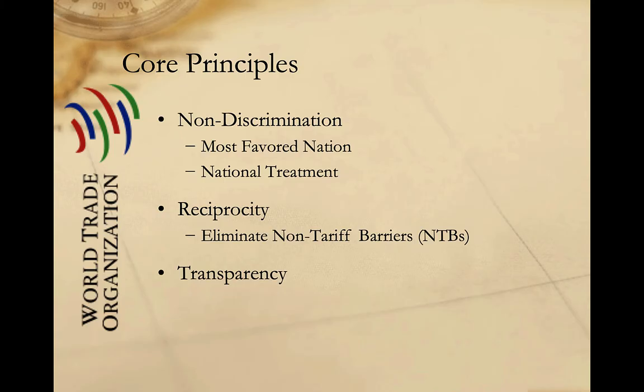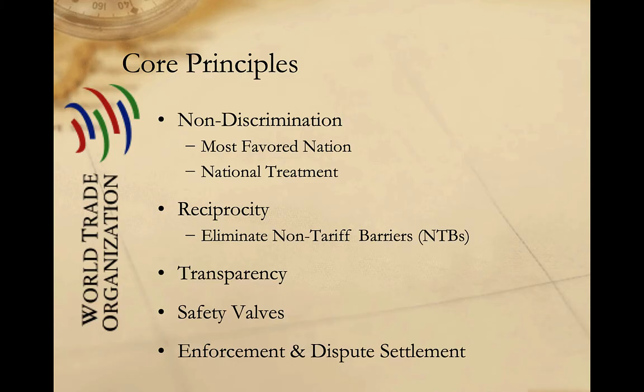Third, the WTO ensures transparency by requiring members to publish trade regulations, and also conducts and publishes regular reviews of administrative regulations in member states. Fourth, the WTO provides safety valves that permit member states under certain specific circumstances to restrict trade to attain non-economic objectives, usually focused on protection of public health and national security. Fifth and finally, the WTO maintains a dispute settlement process which can hear cases brought by member states against other members for violation of WTO rules, with monetary fines and countervailing tariffs available as remedies.